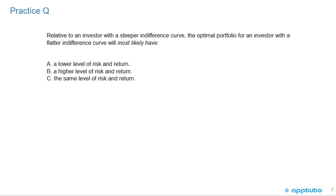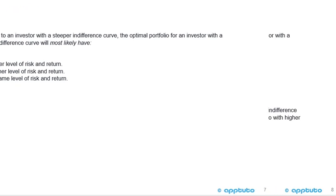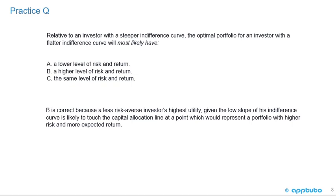Practice question 1: Relative to an investor with a steeper indifference curve, the optimal portfolio for an investor with a flatter indifference curve will most likely have: A) a lower level of risk and return, B) a higher level of risk and return, or C) the same level of risk and return. B is correct — a less risk-averse investor's highest utility, given the low slope of the indifference curve, is likely to touch the capital allocation line at a point representing a portfolio with higher risk and more expected return.